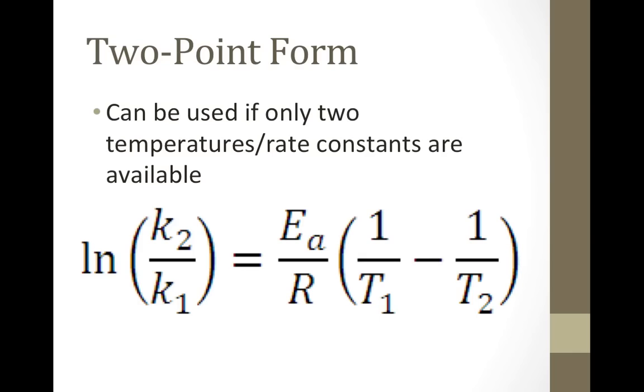The slope-intercept form is useful when multiple values of k and T are known, but if only two values are available, this two-point form can be used or derived from the slope-intercept form. It is derived in much the same way as was previously discussed for the Clausius-Clapeyron equation. I could make a video showing that derivation if requested, but here's the equation all the same.